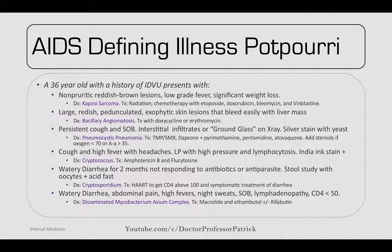For cough, high fever, and headaches, do an LP. If there's high opening pressure and lymphocytosis with a positive India ink stain, this would be cryptococcus. Treat with amphotericin B and flucytosine. If somebody had watery diarrhea for two months not responding to antibiotics or antiparasites, do a stool study with oocysts and acid-fast stain. If positive, think of cryptosporidium.